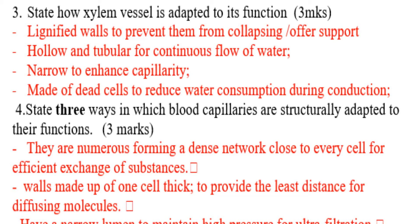They are made up of dead cells to reduce water loss during conduction. Question number four: State three ways in which plant capillaries are structurally adapted to their function. Number one, they are numerous, forming a dense network close to every cell for efficient exchange of substances. Number two, walls are made up of one cell thick to provide the least distance for diffusion of molecules.